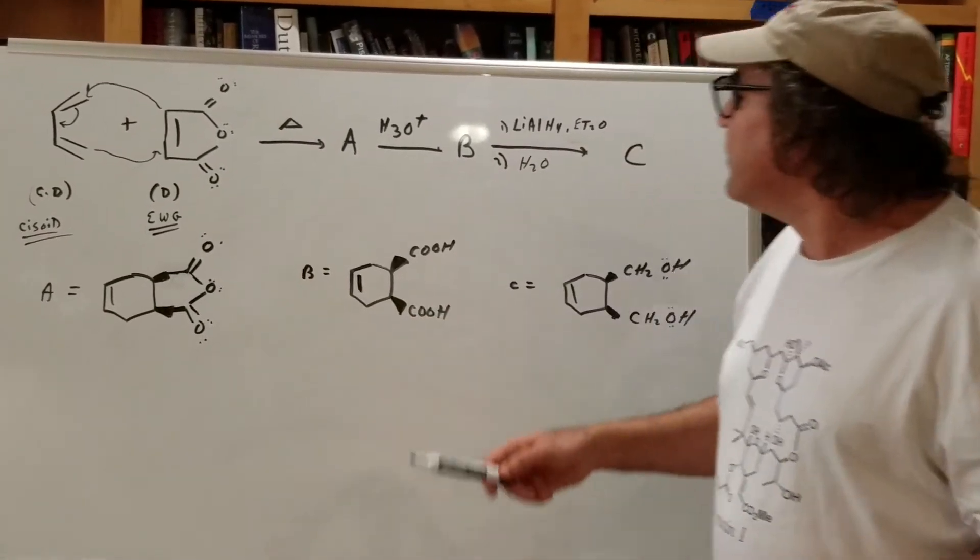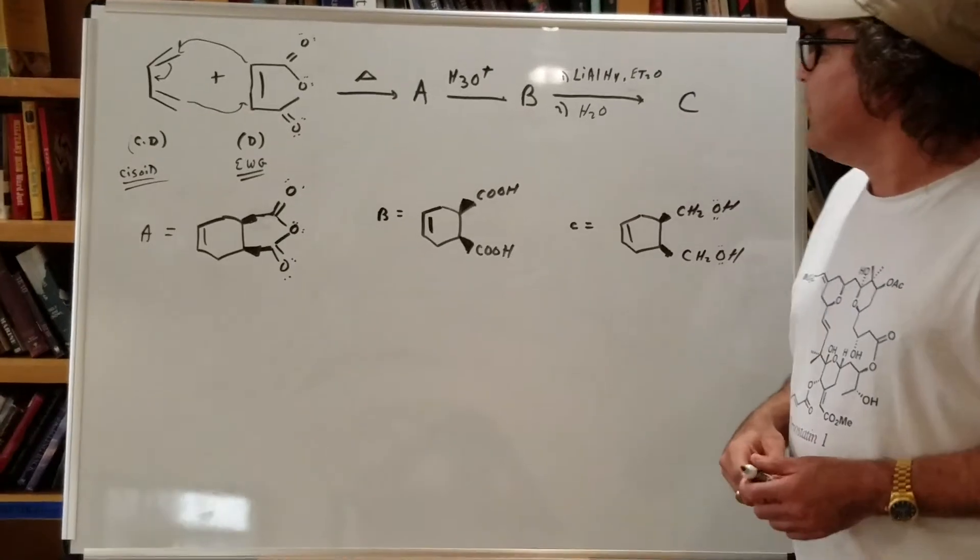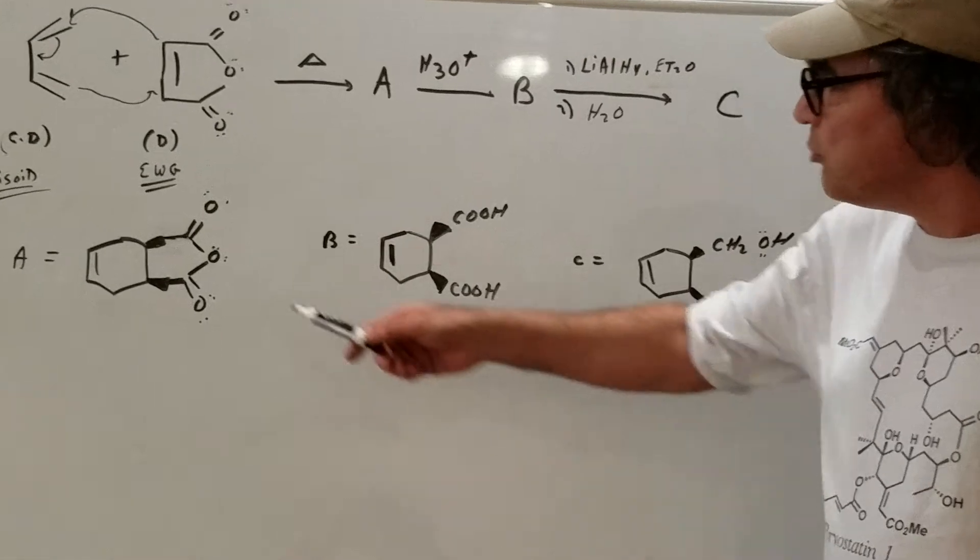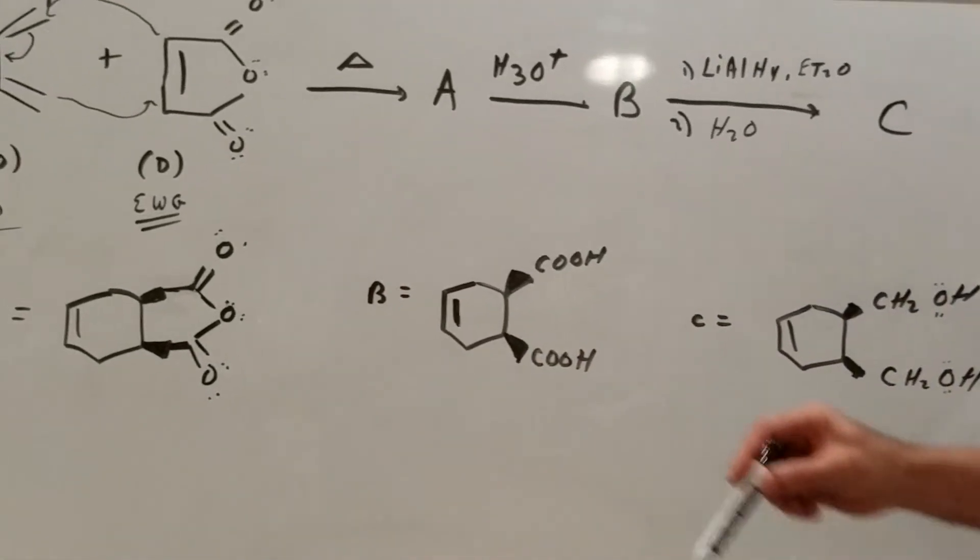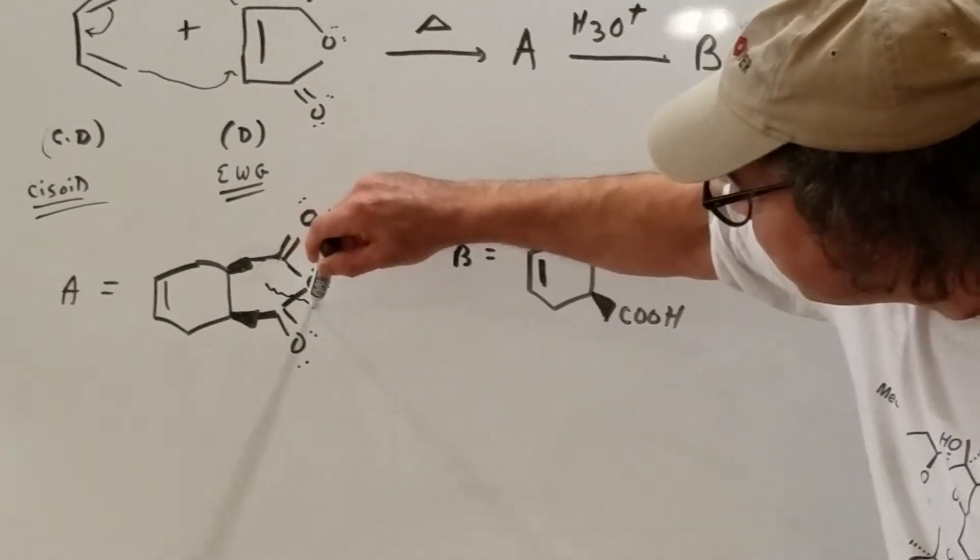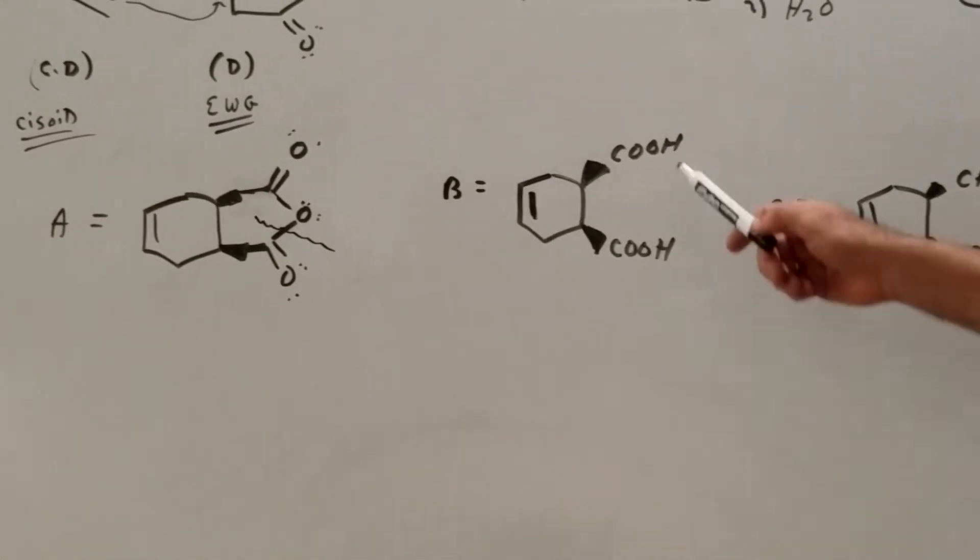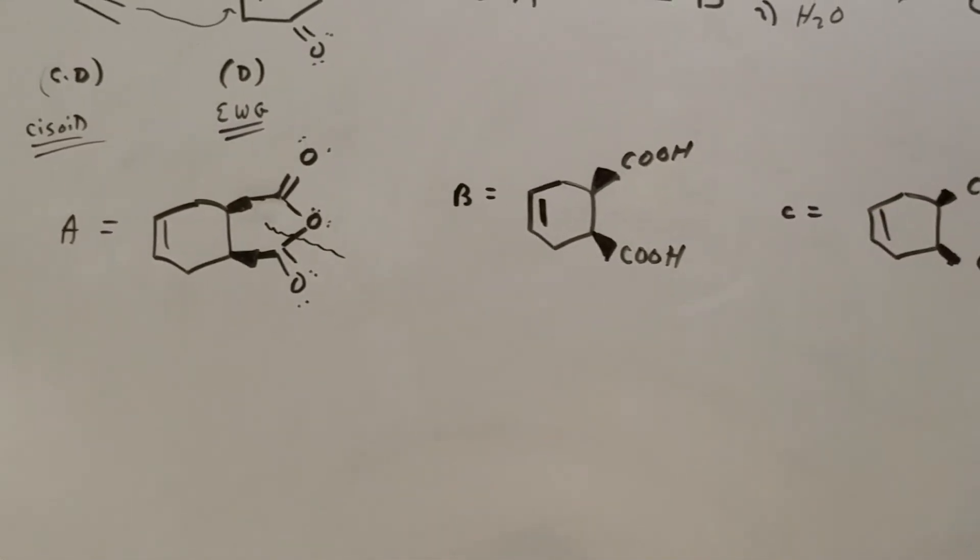Once we got this molecule made, the next reaction is simply the hydrolysis of an anhydride, which is what this chemical is. So what we do is we crack the molecule on either side and we add an H and an OH, and that will give you two carboxylic acids.